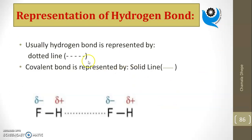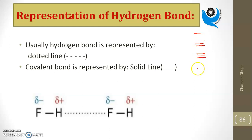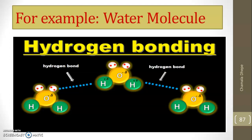Usually, hydrogen bond is represented by a dotted line. A single covalent bond is represented by a solid line, a double covalent bond by two solid lines, and a triple covalent bond by three solid lines. A coordinate bond is represented by an arrow pointing from donor to acceptor. The hydrogen bond is represented by a dash or dotted line, while the covalent bond within HF is shown by a solid line.